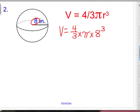4/3 times that pi button times 8 to the third power. That is not 8 times 3, it is not 24. That's 8 times 8 times 8, or 8 with an exponent of 3. So you punch all that in your magical calculator and it's going to give you an answer of 2144.7 cubic inches. That's the volume of that sphere.